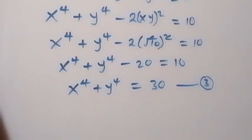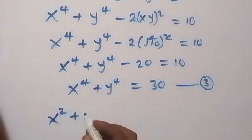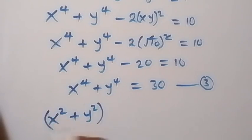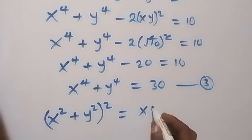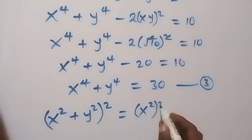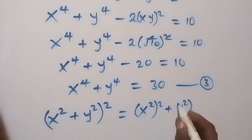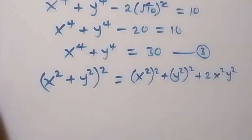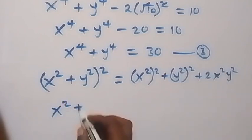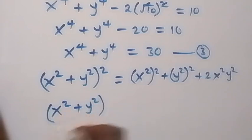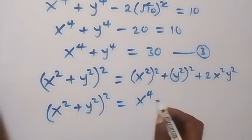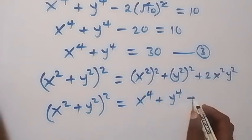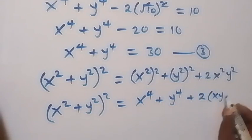Now we use the identity: when we expand x squared plus y squared, all squared, the expansion gives us x to the power 4 plus y to the power 4 plus 2 times xy all squared.